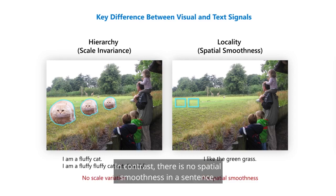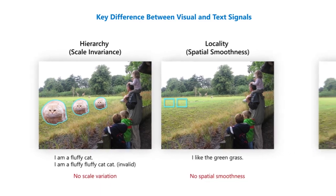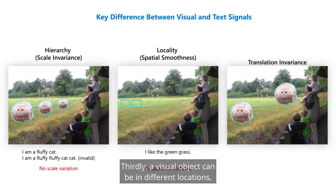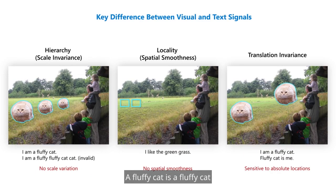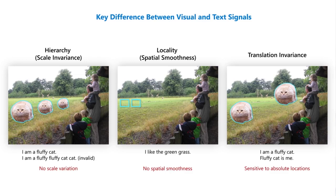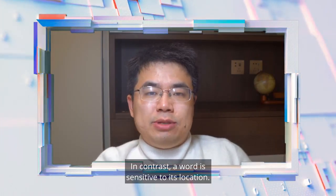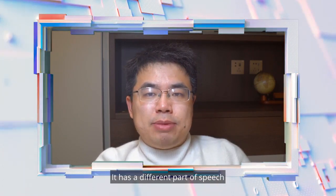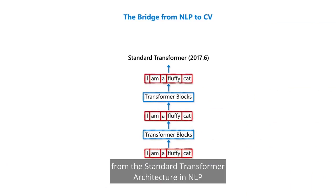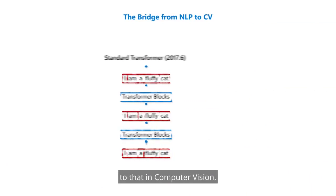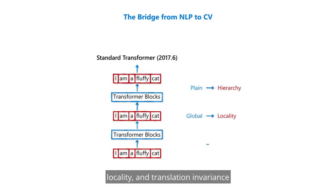In contrast, there is no spatial smoothness in a sentence. Thirdly, a visual object can be in different locations, which motivates translation invariance in ideal design — a fluffy cat is a fluffy cat no matter where it is in an image. In contrast, a word is sensitive to its location; it has different parts of speech when appearing at different locations. By using these computer vision priors, we can build a bridge from the standard transformer architecture in NLP to one suited for computer vision, by introducing priors of hierarchy, locality, and translation invariance.